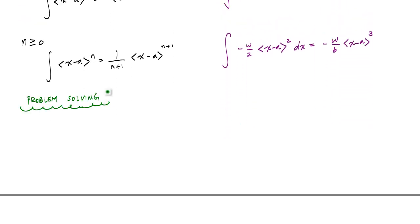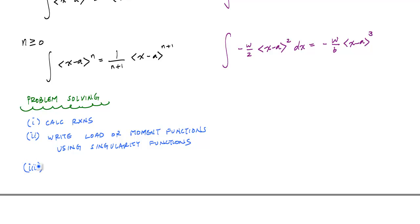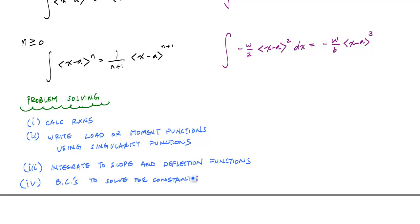If you can understand using singularity functions to describe loading or moment functions and the integration process, then the problem solving is actually a rather simple process. When given a beam with loads, here's the approach: first, calculate reactions using equilibrium equations, assuming the beam is statically determinate. Next, write the load or moment functions using singularity functions. Then integrate to get slope and displacement functions. Constants will appear during integration, and you'll need boundary conditions to solve for those constants of integration.